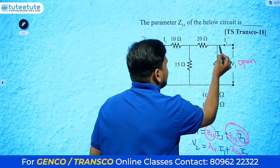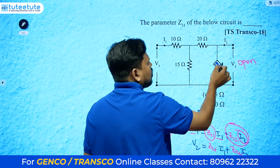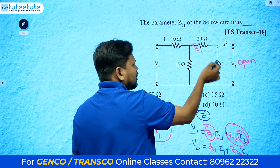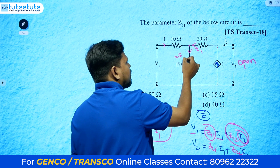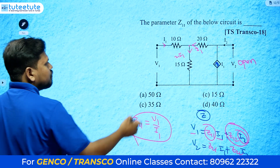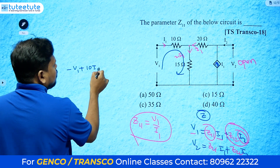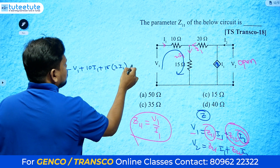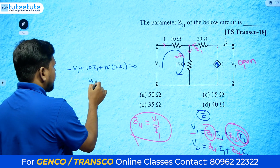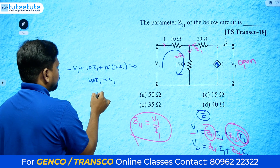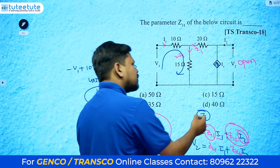Since the output is open, i1 current cannot go that way. The dependent current source also contributes i1, so two times i1 total flows through the 15-ohm branch. Writing KVL: minus v1 plus 10*i1 plus 15*(2*i1) equals 0, giving 10*i1 plus 30*i1 equals v1, so 40*i1 equals v1.